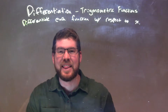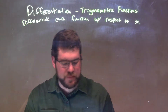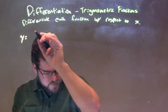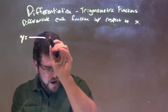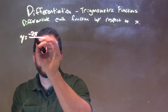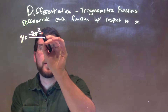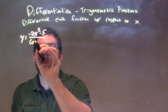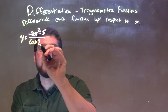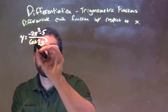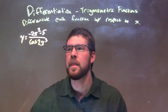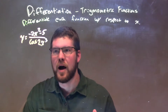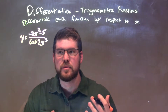If I was given this function, y equals a fraction: negative 2x squared minus 5 over cosine of 2x to the third power. What we want to do first is apply the quotient rule.